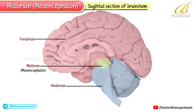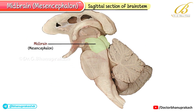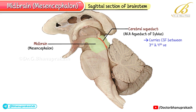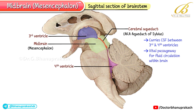In this first slide, you see a sagittal section of the brainstem highlighting the midbrain's position. Note the small canal running through it, which is the cerebral aqueduct, also called the aqueduct of Silvius. This aqueduct carries cerebrospinal fluid between the third and fourth ventricles, a vital passageway for fluid circulation within the brain.